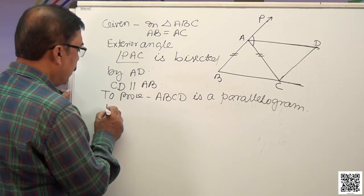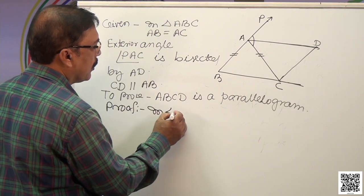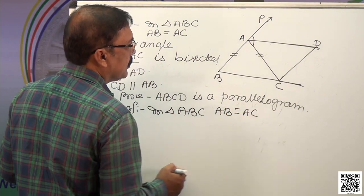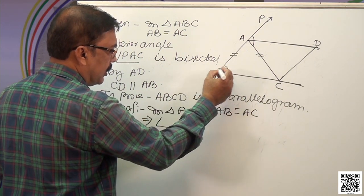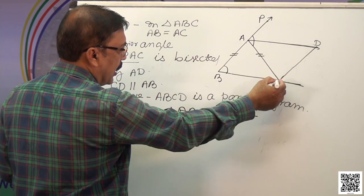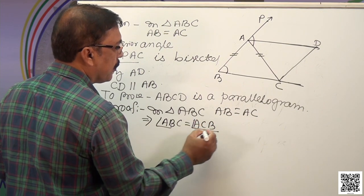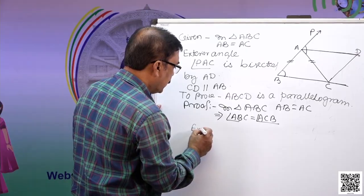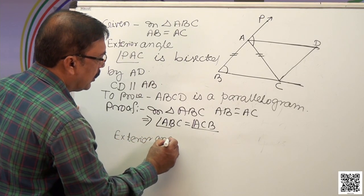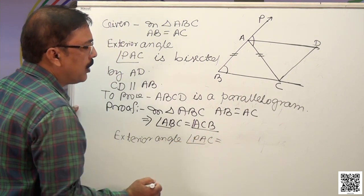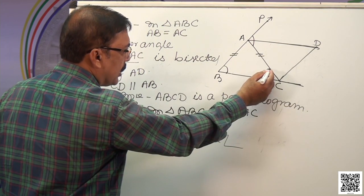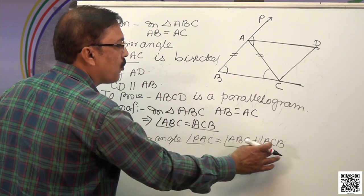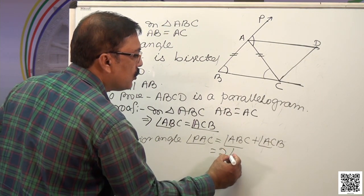In triangle ABC, since AB equals AC, angle ABC equals angle ACB. The exterior angle of a triangle — angle PAC — equals the sum of the two interior opposite angles ABC and ACB. Since those two angles are equal, angle PAC equals 2 times angle ACB.